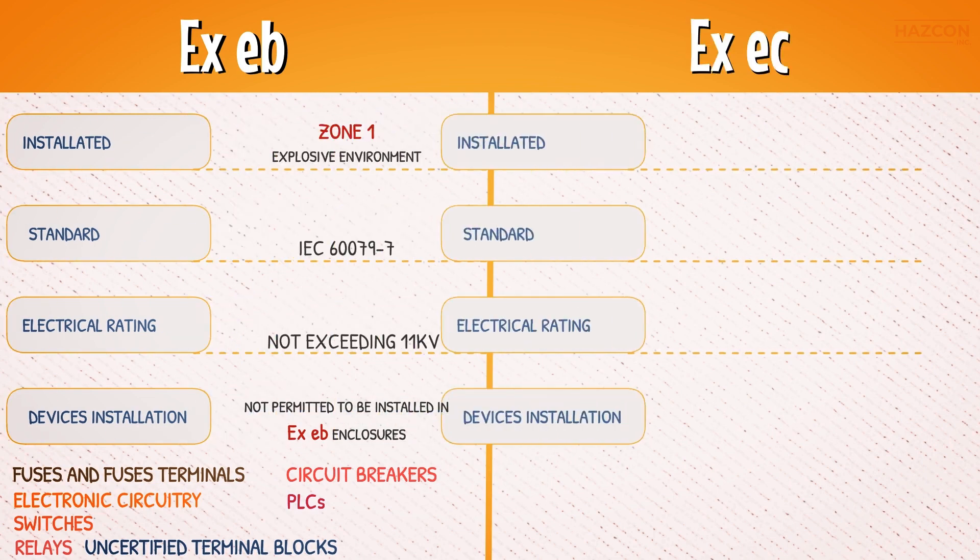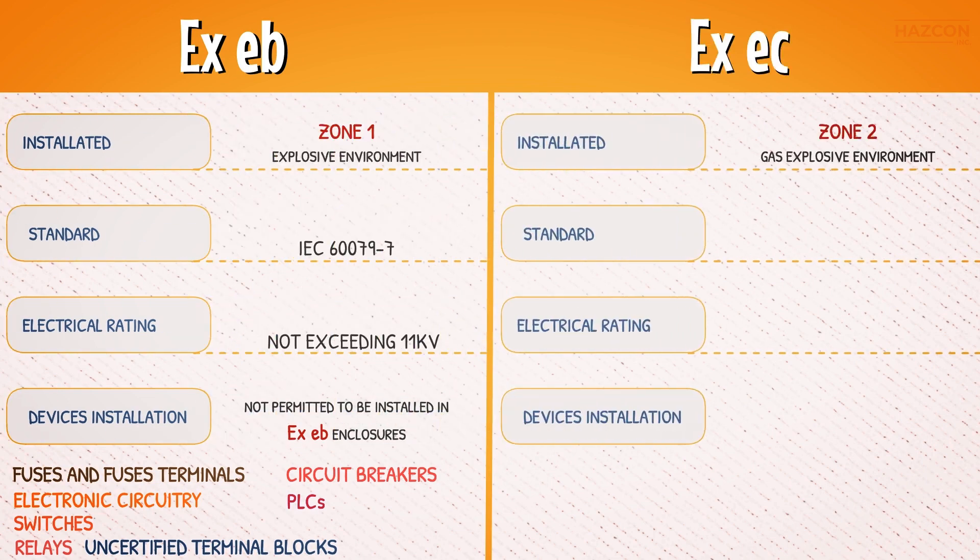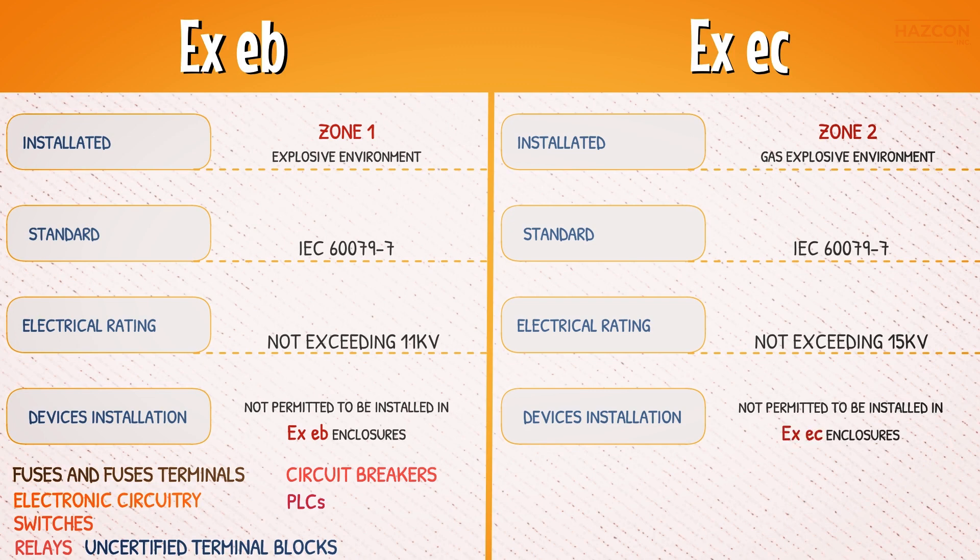Equipment marked Ex ec may only be installed in a Zone 2 gas explosive environment. Given that an Ex eb enclosure is not designed to withstand an explosion, it is critical that there be no sources of ignition present in an Ex eb enclosure. Only electrical equipment with a maximum electrical rating not exceeding 15 kV is permitted for this level of protection. Electrical devices that must definitely not be installed inside an Ex ec enclosure for use in Zone 2 include relays, switches, circuit breakers, or any type of make or break components.